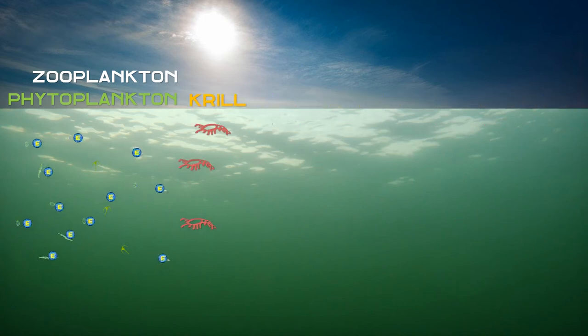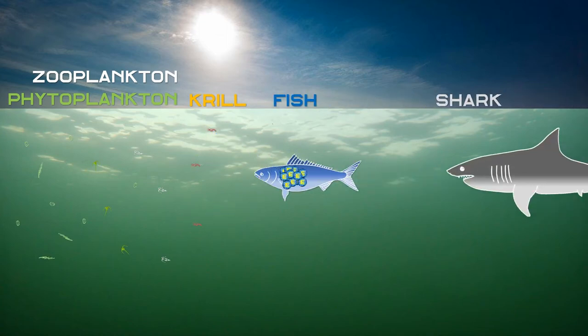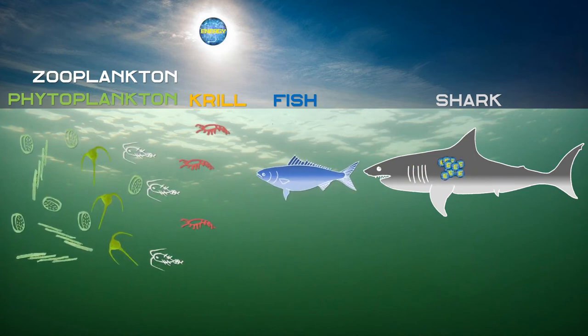Other animals such as krill eat the zooplankton and the phytoplankton which in turn are eaten by other animals such as fish, and we can see how their energy moves through the food chain.